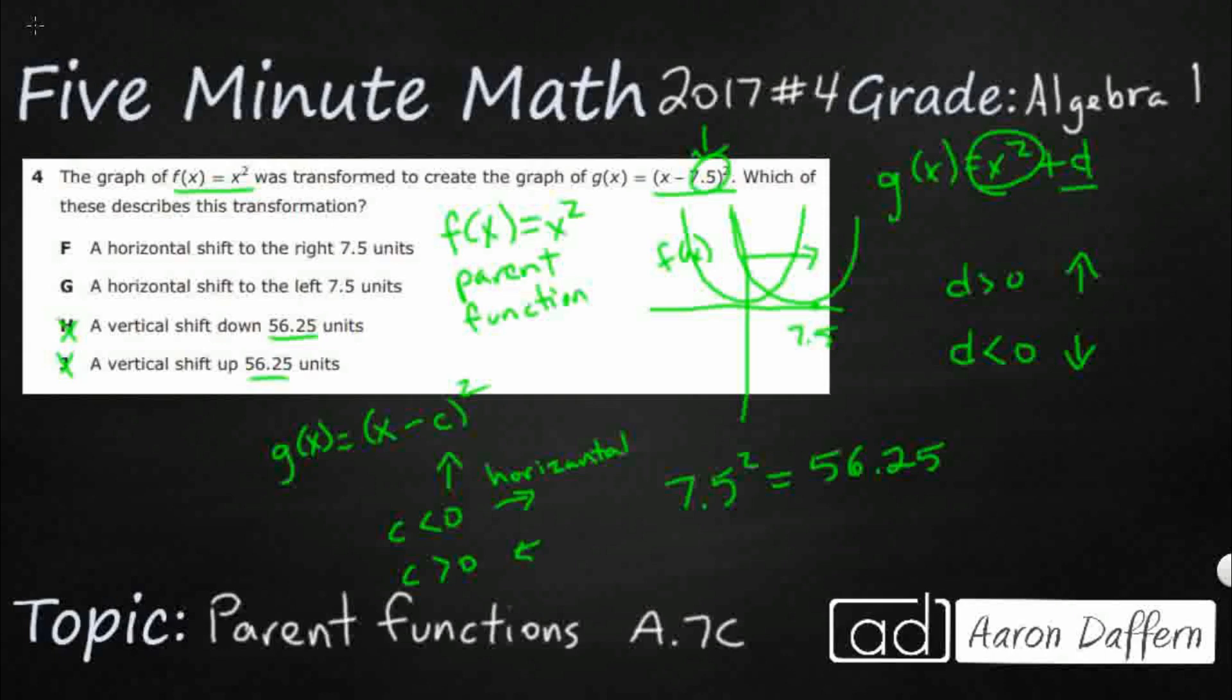So we need to remember here that if it's a minus 7.5 like it is right here, it actually moves it to the right. So it looks like that F is going to be the right answer. But let's go ahead and open up our graphing calculator, double check just to make sure.